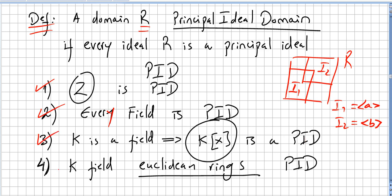A fourth point: if K is a field, then we have a division algorithm for the ring of polynomials. Those rings of polynomials where you have a division algorithm are called Euclidean rings.